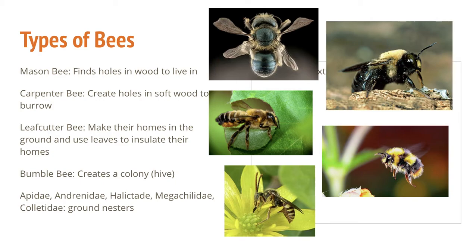We're going to go over some of the types of bees that are native to this area, starting with our mason bee. This bee is kind of unique because it finds holes in wood to live in — so not a hive structure. Most of our wild bees are actually solitary or living in ground nests, so they're not really in a hive or a colony like our honeybees. But the mason bee finds holes in wood and kind of makes a nest in that area.